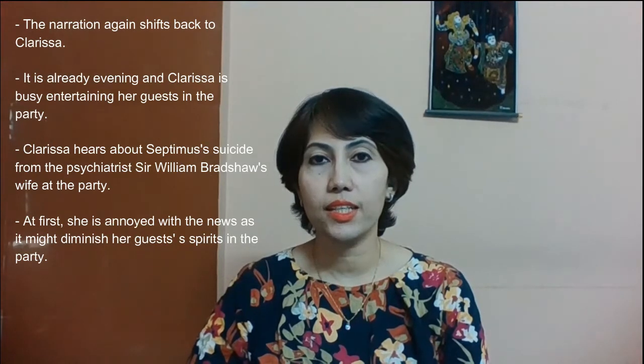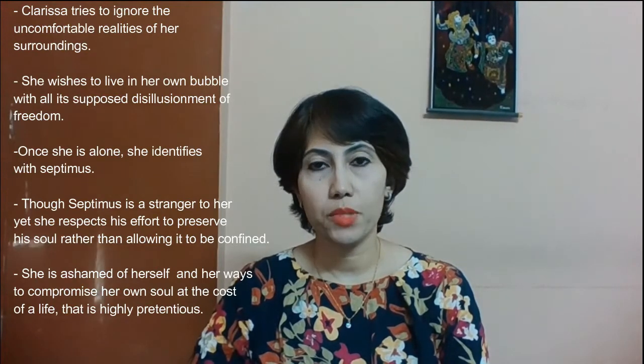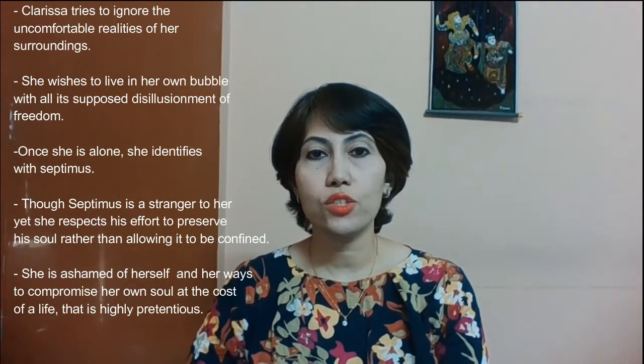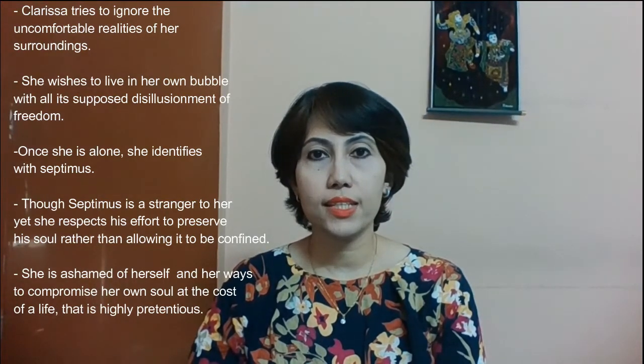The narration shifts back to Clarissa. It is already evening and she is busy entertaining her guests at the party, who are all upper-class Londoners. She hears about Septimus's suicide from Sir William Redshaw's wife at the party. At first, Clarissa is annoyed with the news, as it might diminish everyone's experience. She tries to ignore the uncomfortable realities of her surroundings and wishes to live in her own bubble, with all its supposed illusions of freedom. But once she is alone in her room, she identifies with Septimus. Though he is a stranger she has never met, Clarissa respects his act, considering it an effort to preserve the integrity of his soul rather than allowing it to be confined. She feels ashamed of her own ways of compromising her soul at the cost of a life that is highly pretentious.